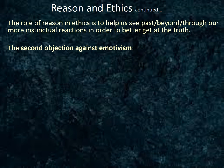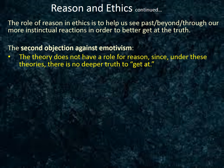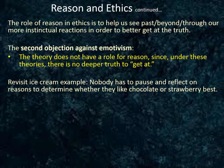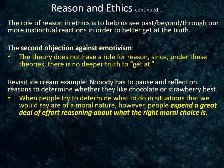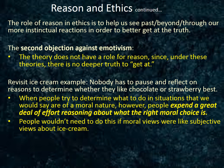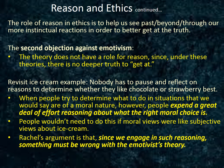In a similar way, the role of reason in ethics is to help us see past our more instinctual reactions in order to better get at the truth. This brings us to the second objection against emotivism, which can also be leveled against simple subjectivism. Both forms of subjectivism do not have such a role for reason since, under these theories, there is no deeper truth to get at. Nobody has to pause and reflect on reasons to determine which flavor of ice cream they like better. Yet when people try to determine what to do in situations of a moral nature, most people spend a great deal of effort reasoning about what the right moral choice is. If all there was to morality were subjective feelings or expression of desires and attitudes, there should be no need for such reasoning. Rachels' argument is that since we do engage in such reasoning, something must be wrong with the emotivist theory.